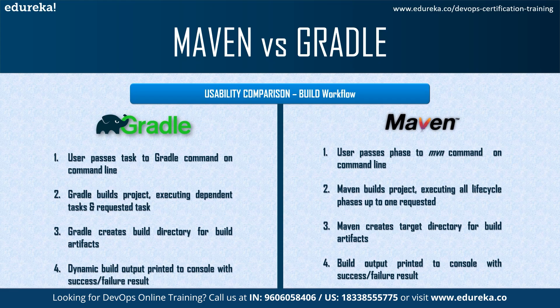Starting with Gradle: before the first step, you need to install local Java and set up a project for Gradle. Then the user passes tasks to the Gradle command on the command line or in an IDE. Gradle builds the project by executing dependent tasks and requested tasks, then creates a build directory for build artifacts such as your JAR file. Dynamic build output is printed to the console with a success or failure result.